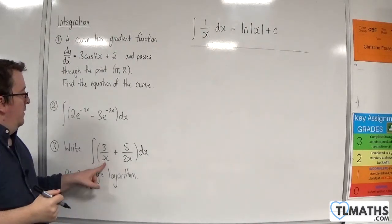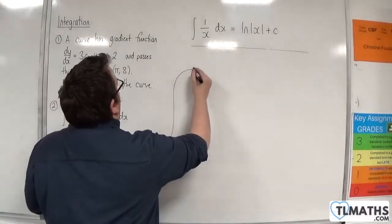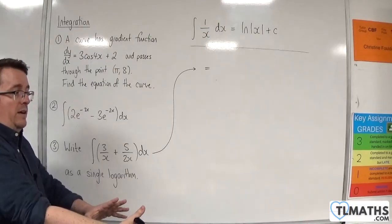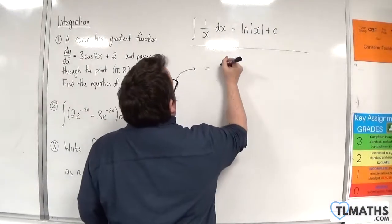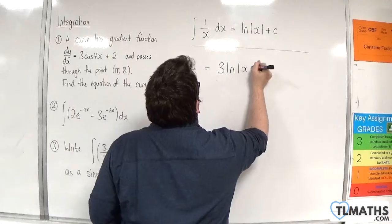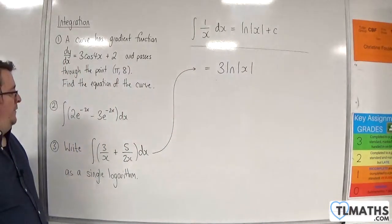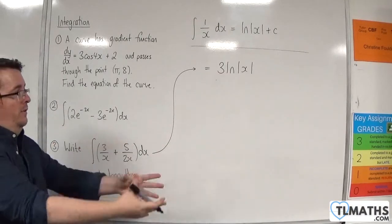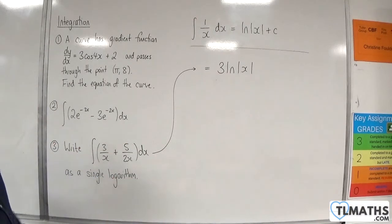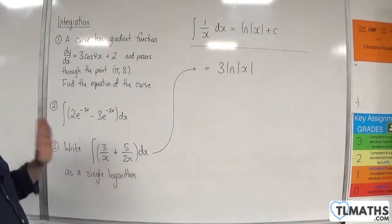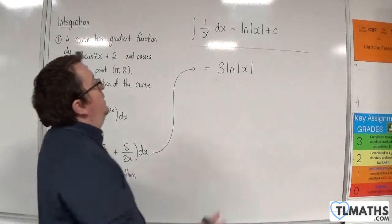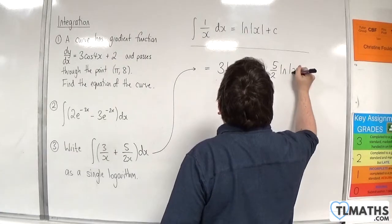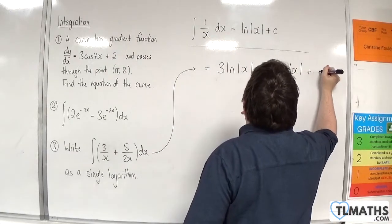The first one here, we've got 3 over x. Now 3 over x is the same as 3 times 1 over x, so that would be 3 natural log of x when it integrates. The 5 over 2x is 5 halves times 1 over x, so that will integrate to 5 halves natural log of mod x plus some constant c.